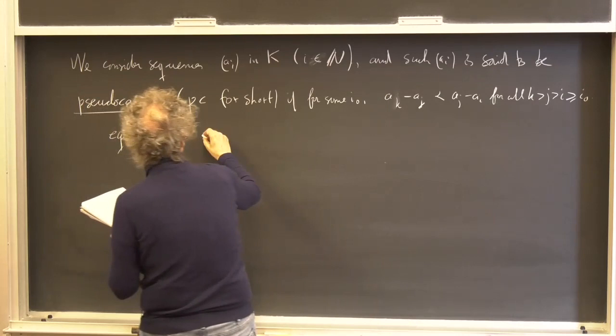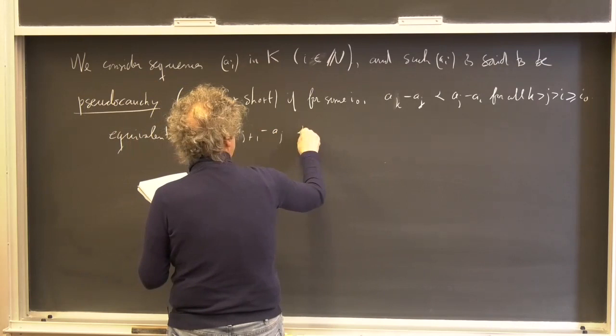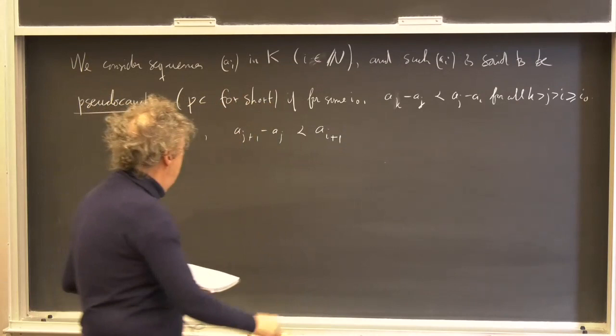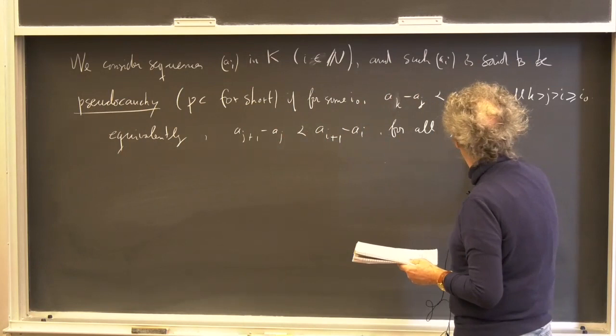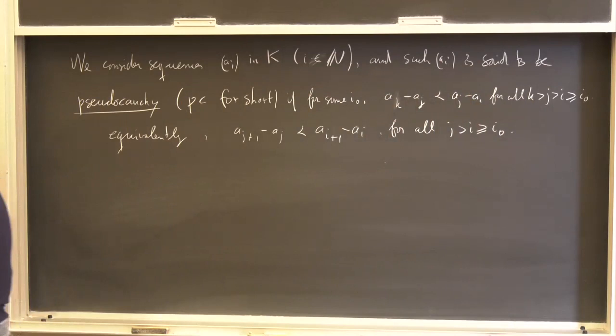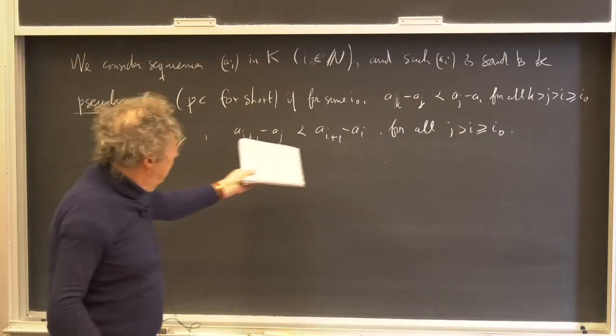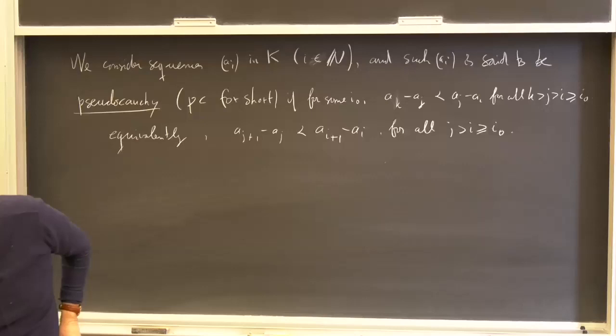Equivalently, you can just say a_(j+1) minus a_j is compared to a_(i+1) minus a_i for all j bigger than i. We don't really care about some of the initial terms, but only about what happens far down the sequence.